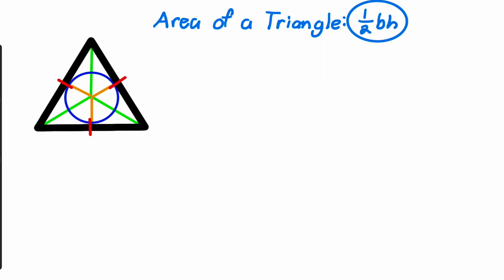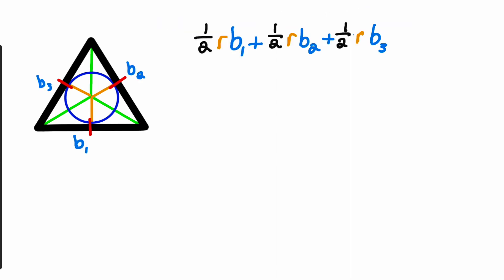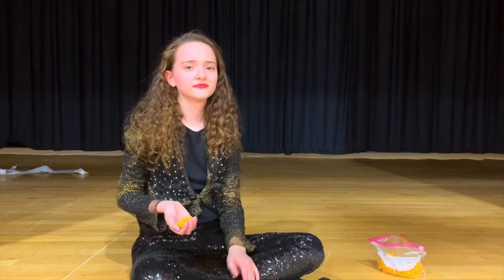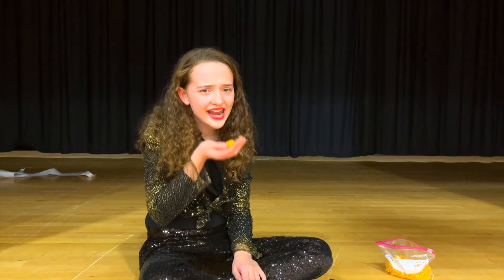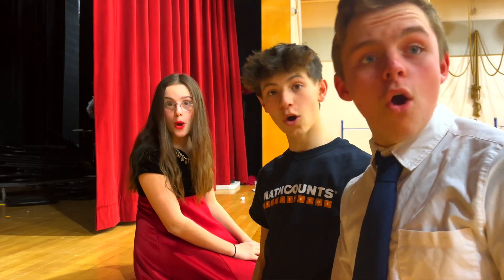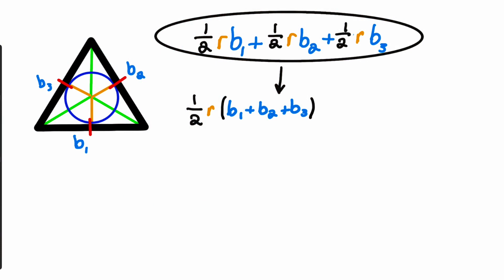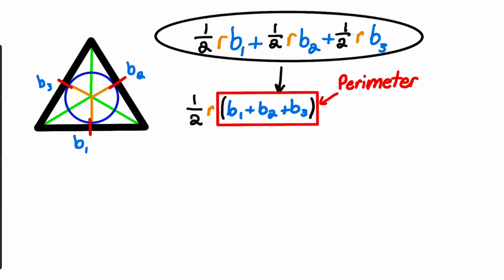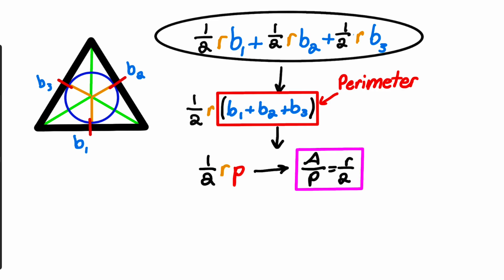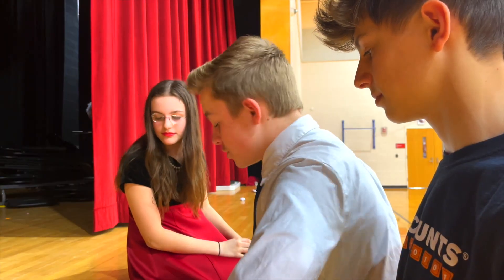To find the area of the entire triangle, we must use the formula one-half base times height, three times. When we do this, we will see that the formula for the area becomes: one-half radius times base one, plus one-half radius times base two, plus one-half radius times base three. If we look carefully at this formula, we can see it becomes one-half radius times (base one plus base two plus base three), which gives us one-half radius times perimeter.